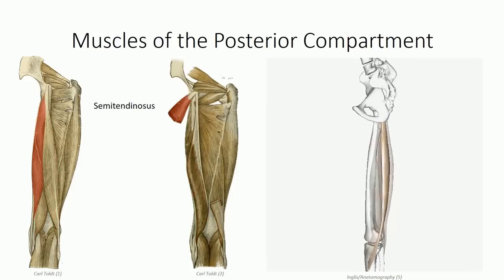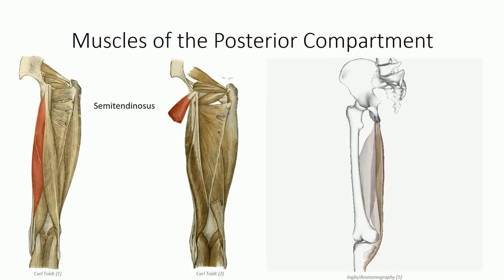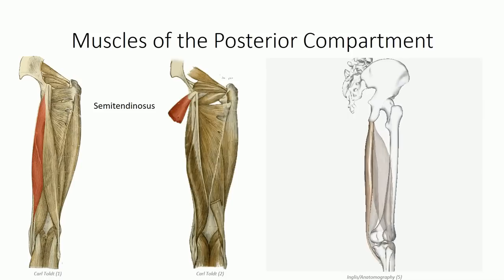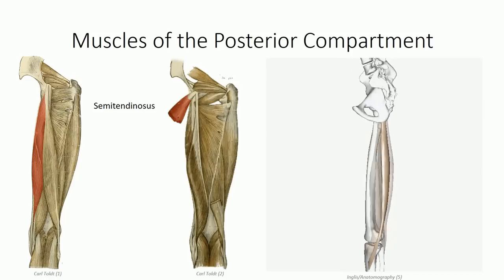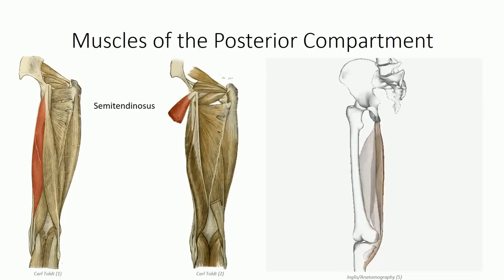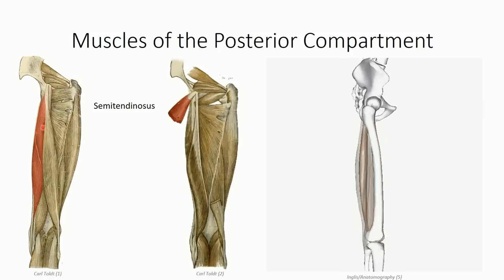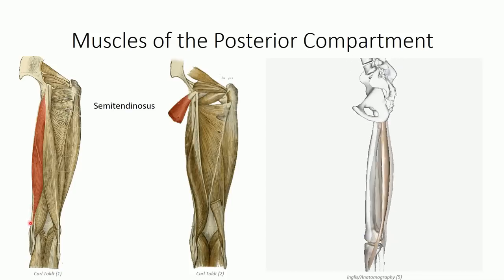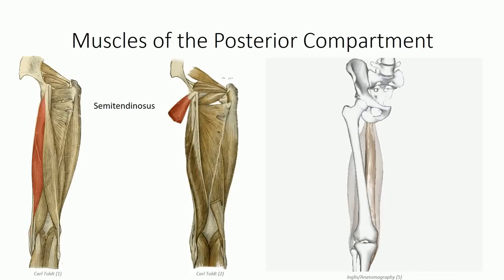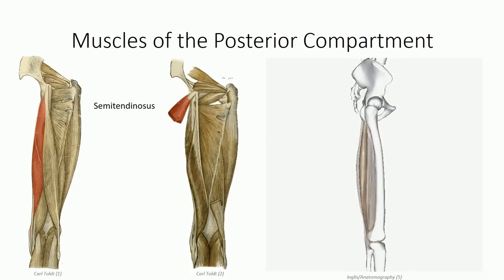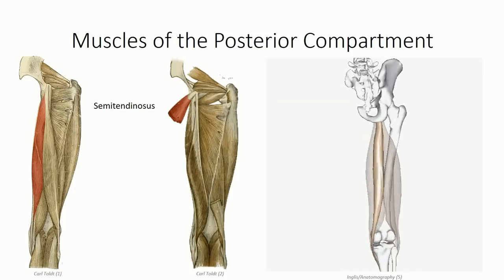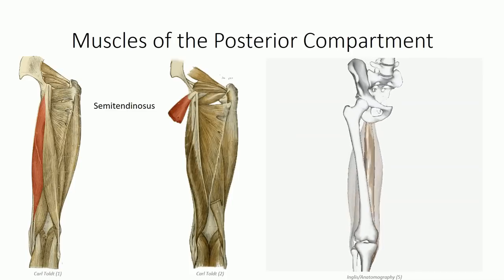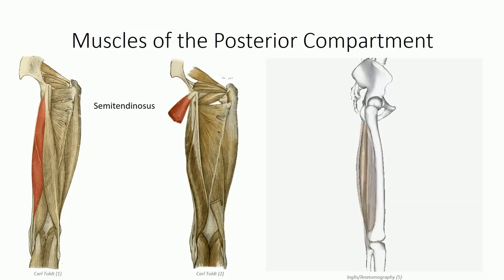The more superficial of the medial muscles is the semitendinosus muscle, so named because of its long cord-like tendinous insertion. From the ischial tuberosity, the semitendinosus projects medially to insert on the anteromedial surface of the tibia — an insertion point we identified in the previous lesson. Thus, the semitendinosus is the third muscle to insert as the pes anserinus.